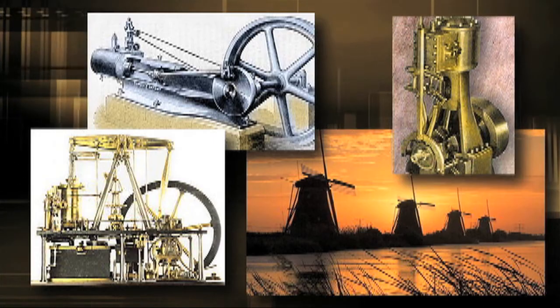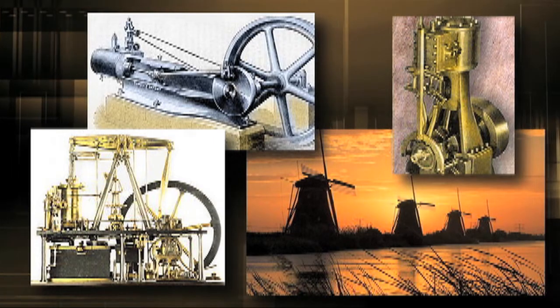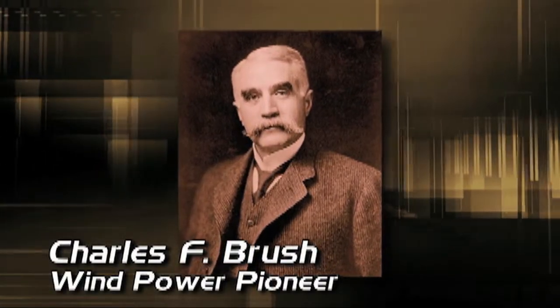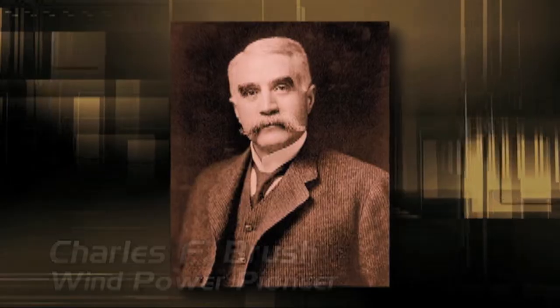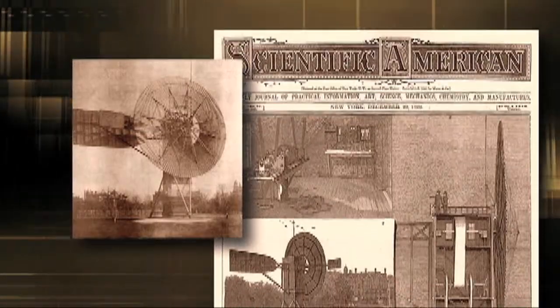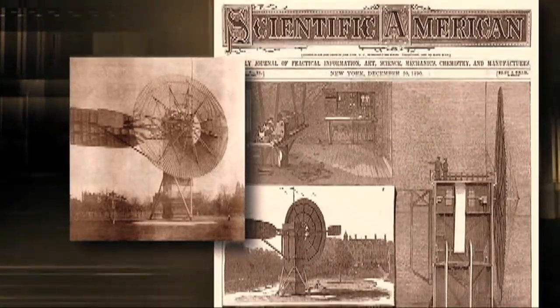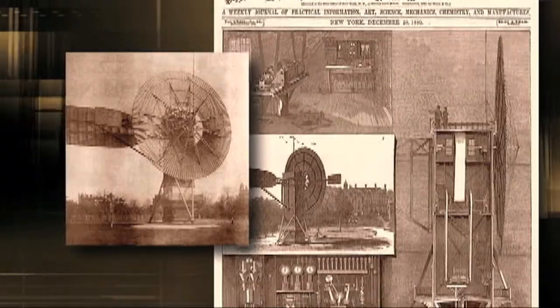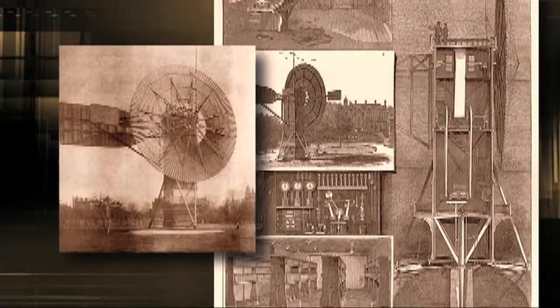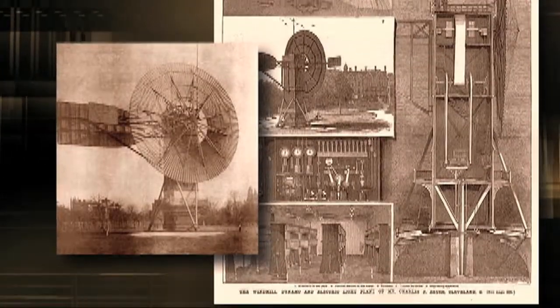Nobody had yet designed a windmill that could generate electricity. In 1888, an American inventor named Charles F. Brush built a large post-mill-style windmill in Cleveland, Ohio. Using a multiple-bladed picket fence rotor and a large hinged tail, his was the very first windmill to incorporate a step-up gearbox that turned an electric generator at 500 revolutions per minute. Brush's windmill produced only 12 kilowatts of power, but it worked for 20 years and demonstrated the possibilities of wind power for electricity.